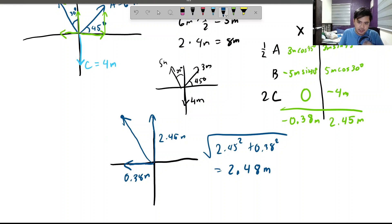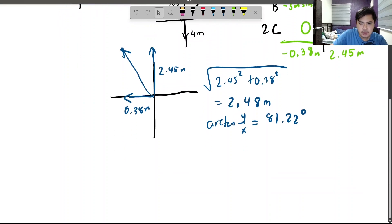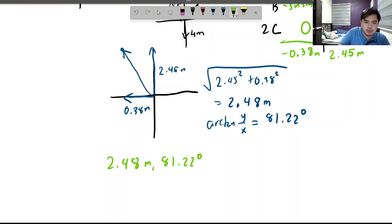So, what about the angle? Well, it is arctan of Y over X. And arctan Y over X, that will be around 81.22 degrees. So, we can say that the vector is 2.48 meters, 81.22 degrees. And then, what direction? Well, it seems to be going in this direction. So, this is the 81.22 degrees. This is west. And this is north. So, this is north of west. That's your answer.